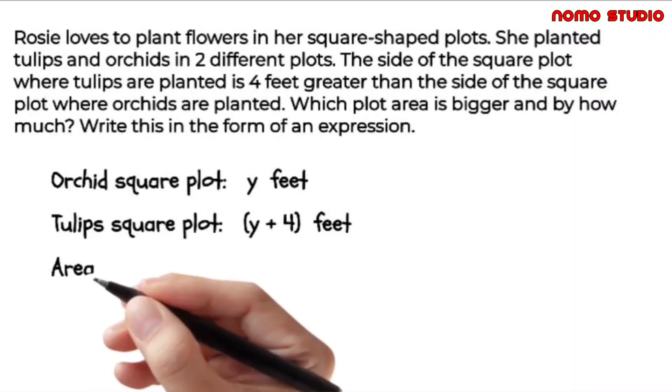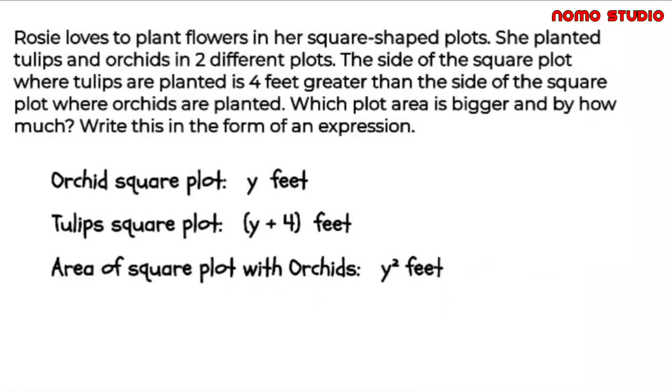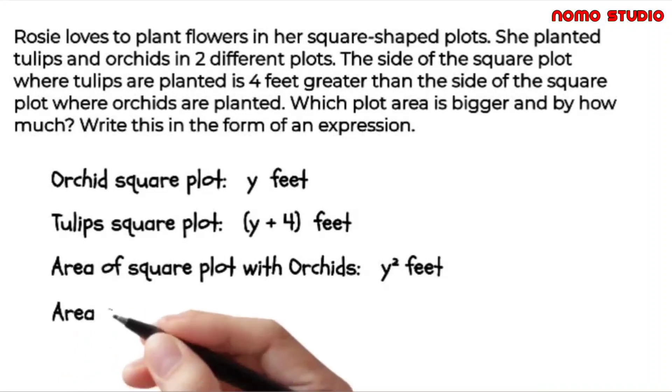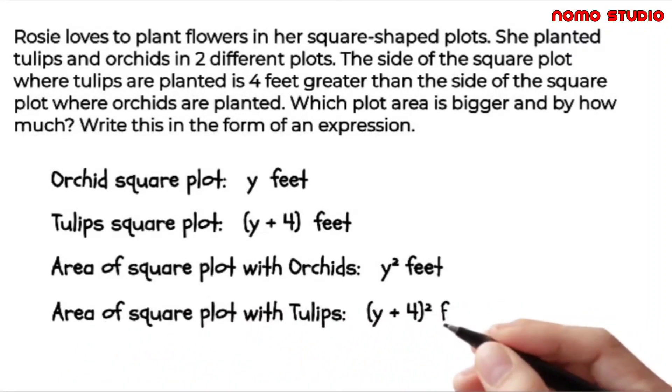So the area of the square plot with orchids is Y squared. And the area of the square plot with tulips is equal to Y plus 4 squared.